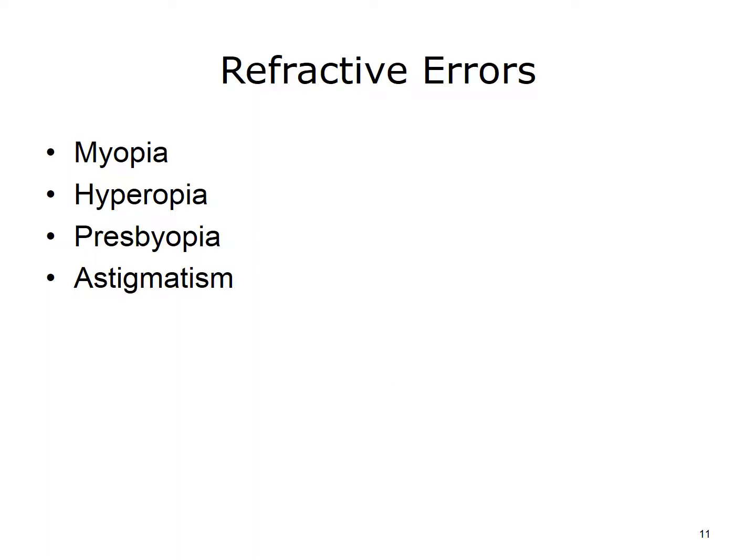Hyperopia, or farsightedness, is when you have clear vision in the distance but blurry close up. Presbyopia is the inability to focus close up as a result of aging. And astigmatism is when you have focus problems caused by the cornea. Treatment for refractive errors includes glasses or contact lenses. Laser eye surgery may also be a possibility.